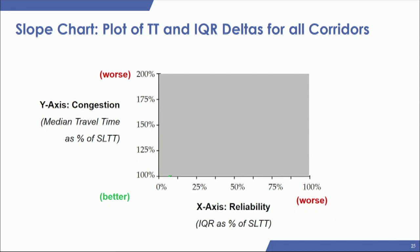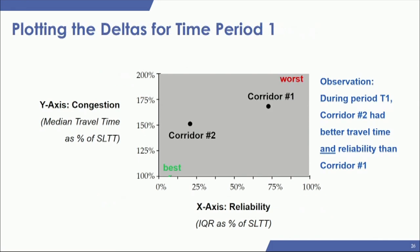These percentages are visualized in what's known as a slope chart. The y-axis is your congestion percent and the x-axis is your reliability percent. You want to end up in the bottom left — both reliability and congestion as low as possible. You can plot two corridors across the same time period: corridor two shifting more to the bottom left means it had better travel time and reliability than corridor one.